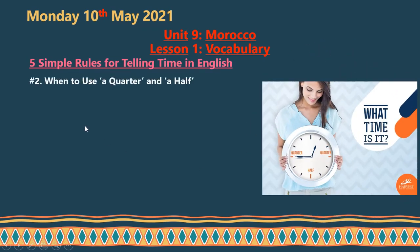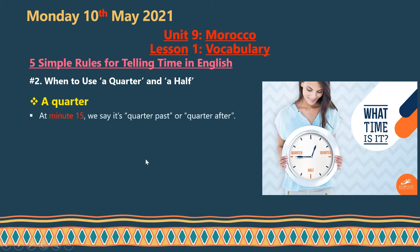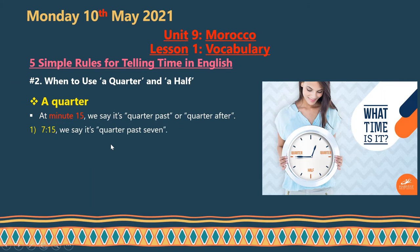For rule number two, we talk about 'quarter' or 'half.' A quarter refers to 15 minutes. For 15 minutes past the hour, we say 'a quarter past' or 'a quarter after.' For example, 7:15 — we say 'a quarter past seven.'